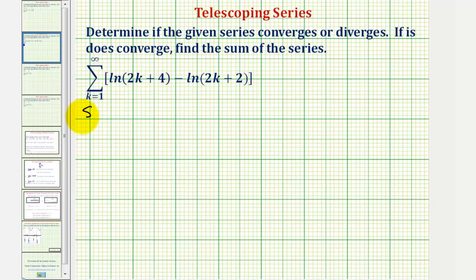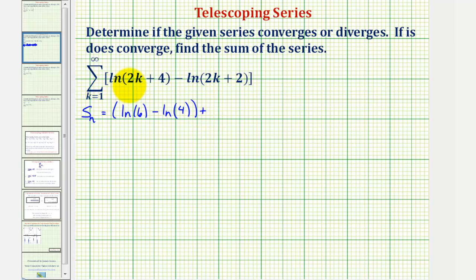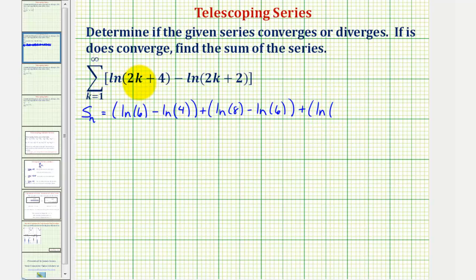So the partial sum S sub n would be equal to: the first term when k is equal to one gives us natural log of (2·1+4), that's natural log six, minus natural log of (2·1+2), which is four. Plus when k is two we have natural log of (2·2+4), that's natural log eight, minus natural log of (2·2+2), which is six. Plus when k is three we have natural log of (2·3+4), that's ten, so natural log ten minus natural log of (2·4+2), which is natural log eight.